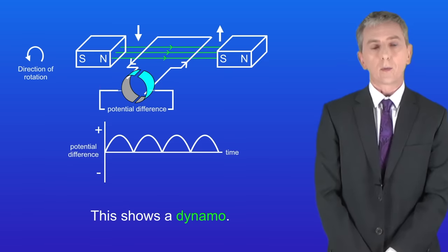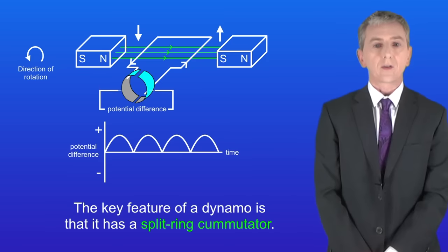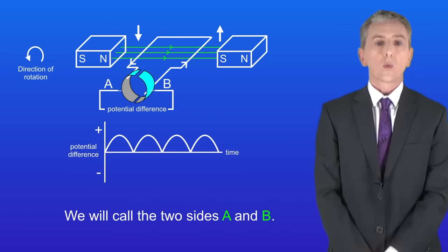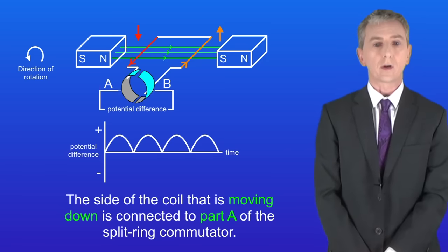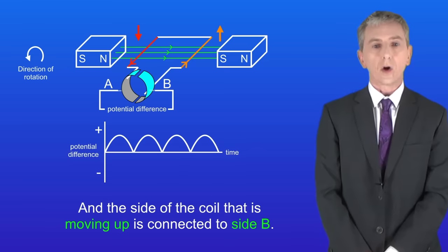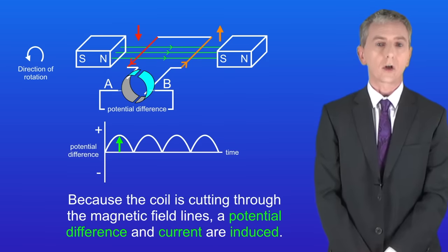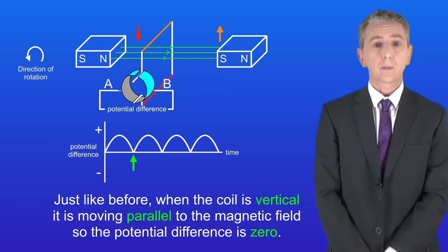Now this shows a dynamo. A dynamo produces a direct current. The key feature of a dynamo is that it has a split ring commutator. The split ring commutator has two sides separated by a gap — we'll call them A and B. The side of the coil moving down is connected to part A, and the side moving up is connected to side B. Because the coil is cutting through the magnetic field lines, a potential difference and current are induced. When the coil is vertical it's moving parallel to the magnetic field, so the potential difference is zero.